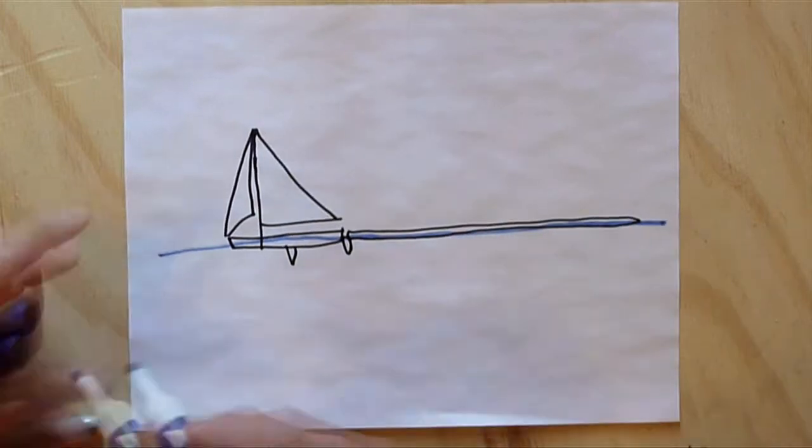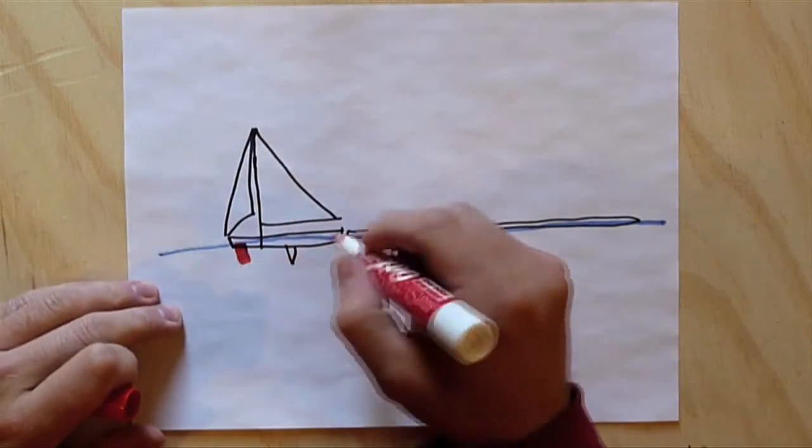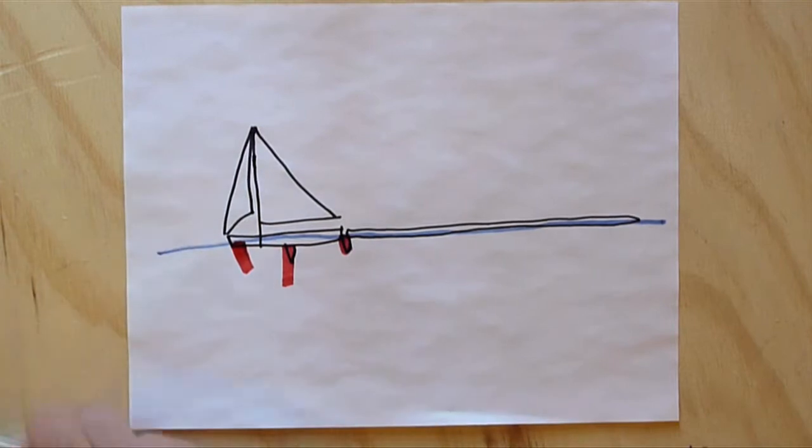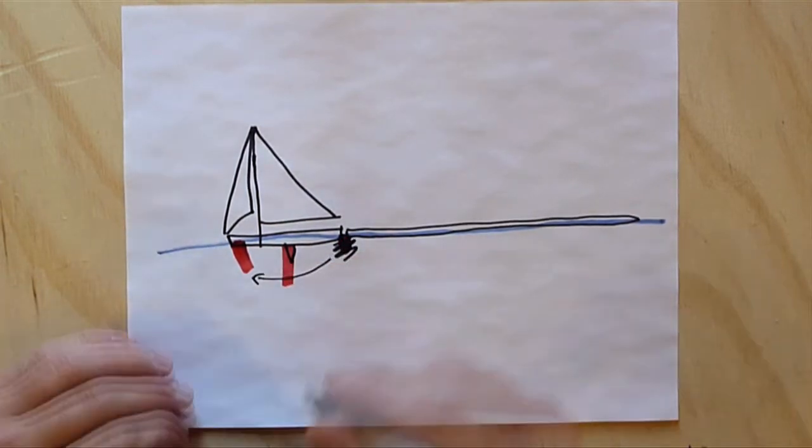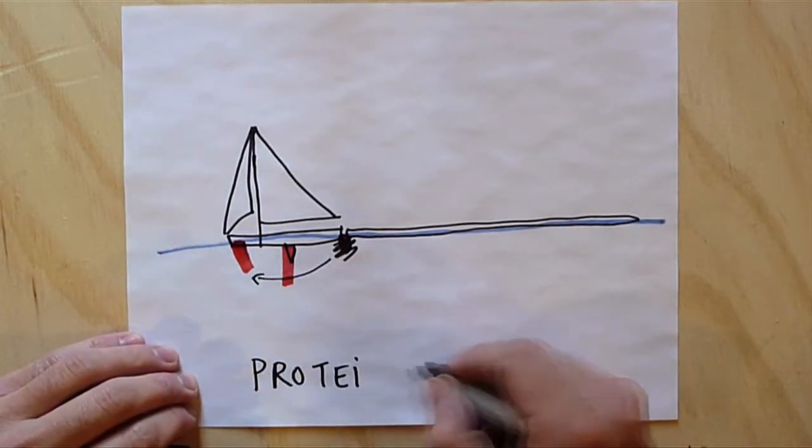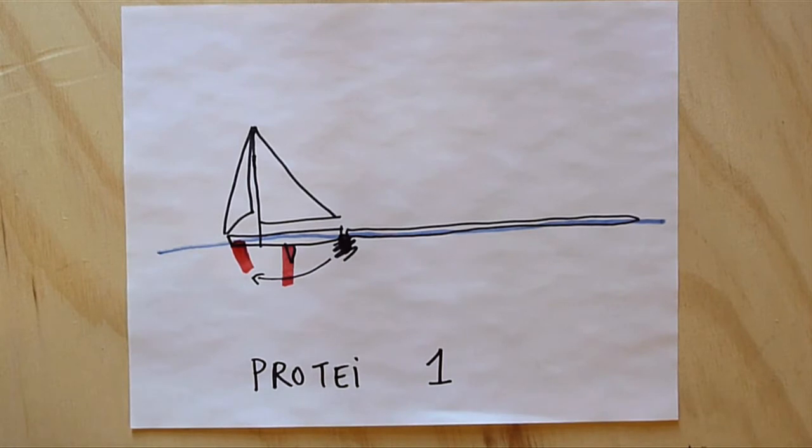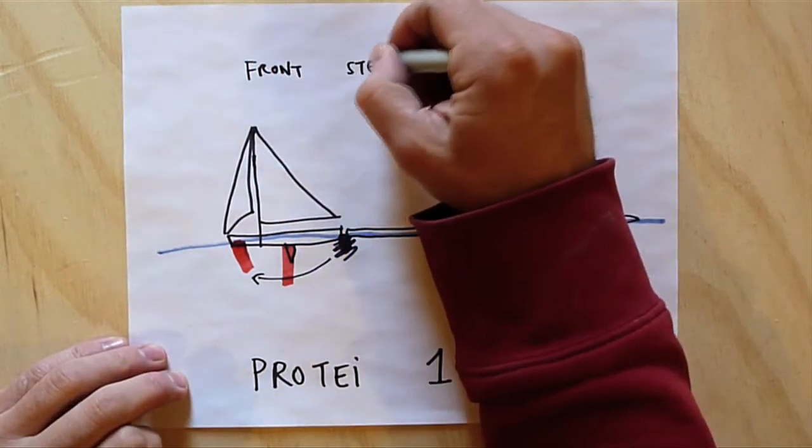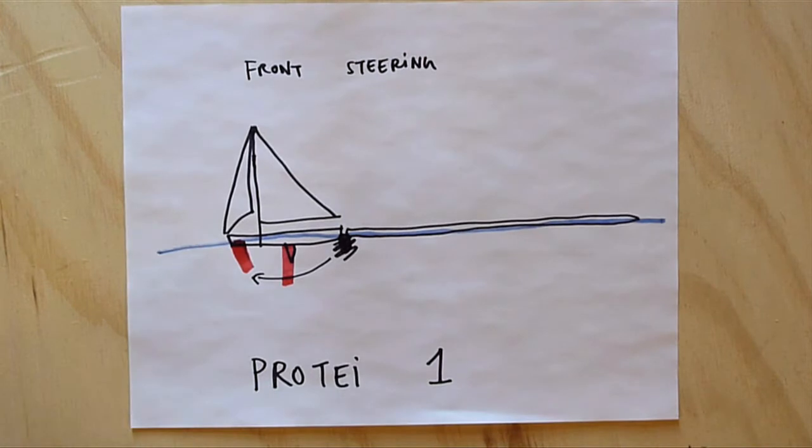So we took a normal RC boat and we put the steering at the front. Normally it's at the back. And we got really great results. With a small rudder at the front, we were able to control a very long tail. So that's Pro-Type number 1.